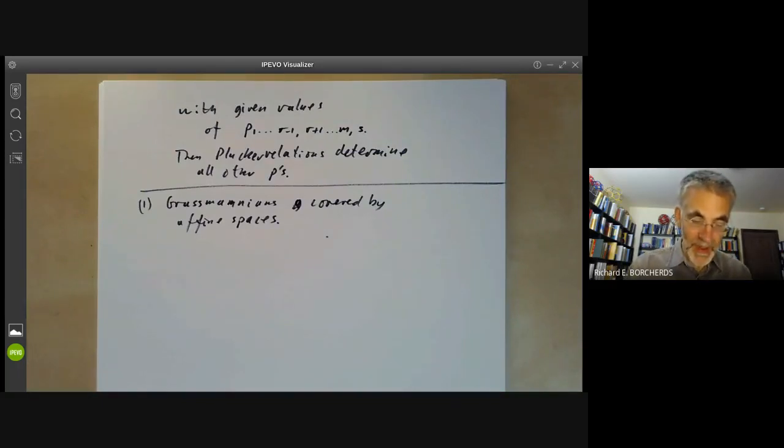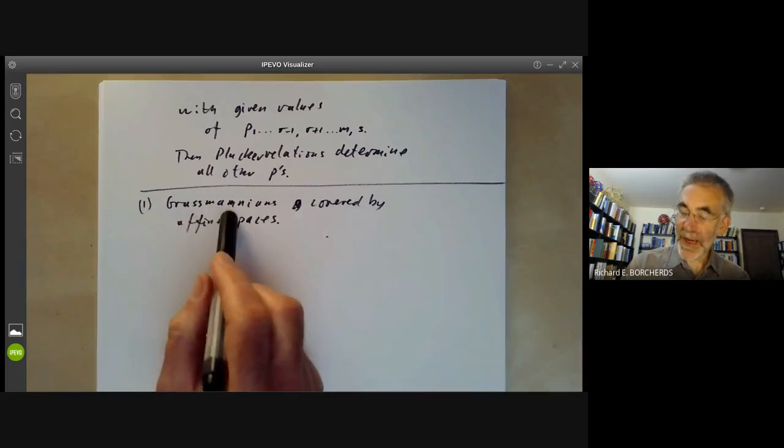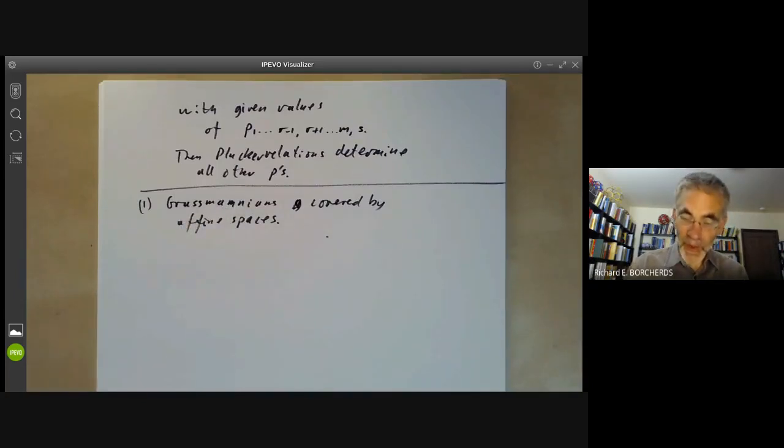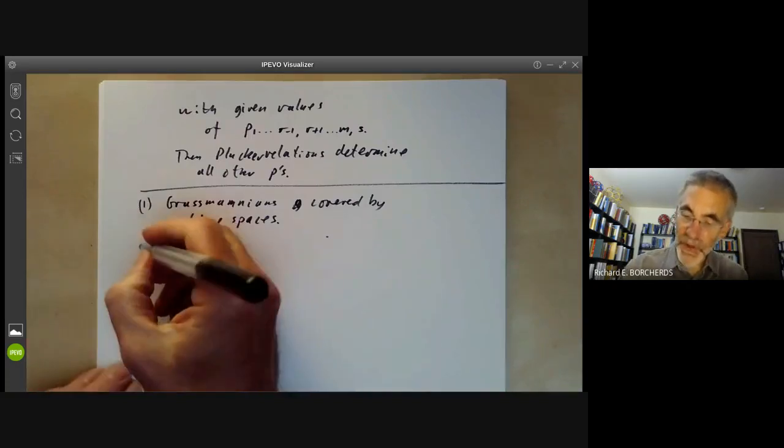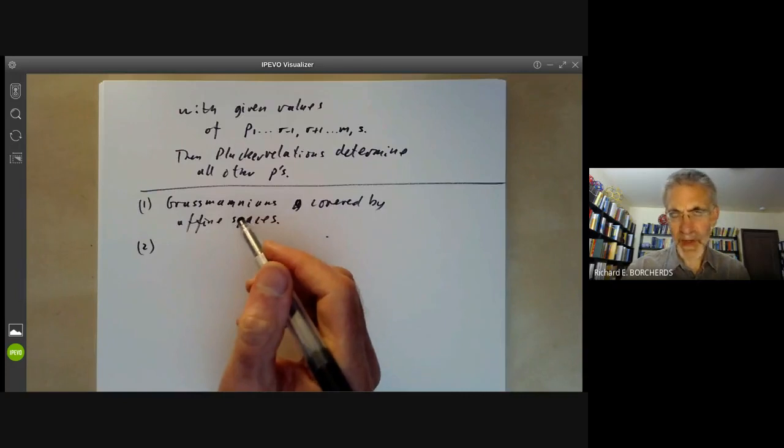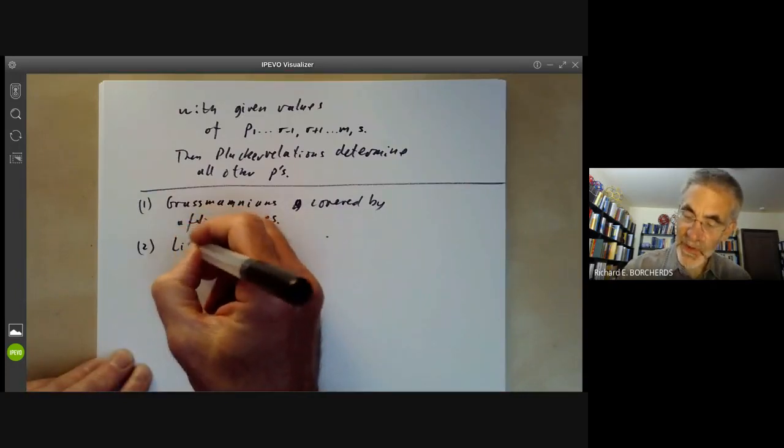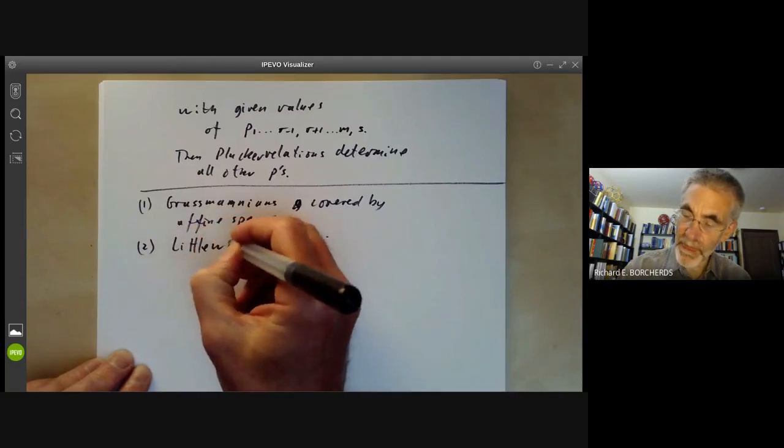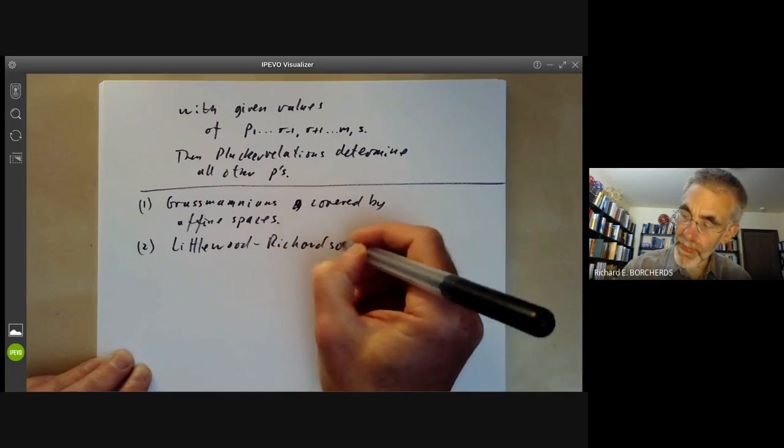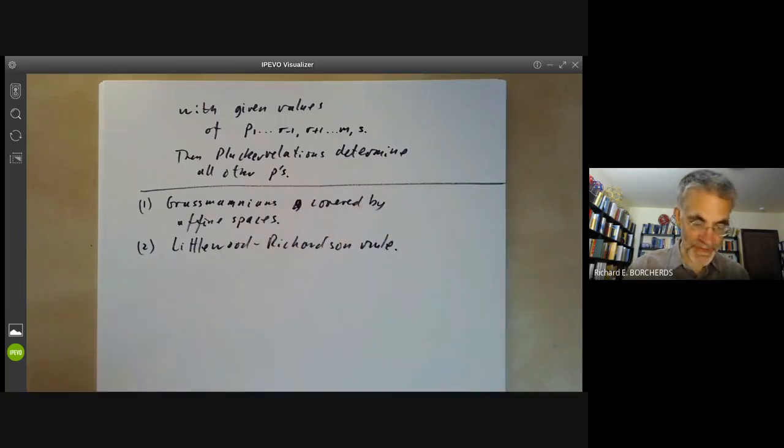And these can be used to work out the cohomology of the Grassmannians. Cohomology groups also have a product on them. The product of the Grassmannian cohomology turns out to be rather complicated. It's given by something called the Littlewood-Richardson rule.